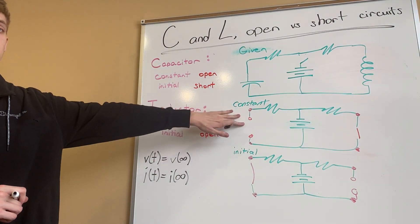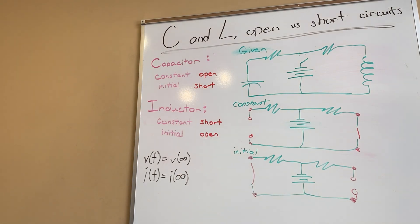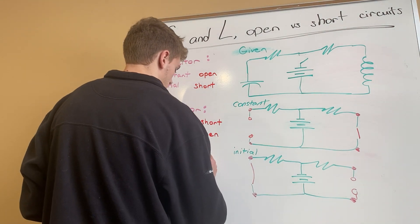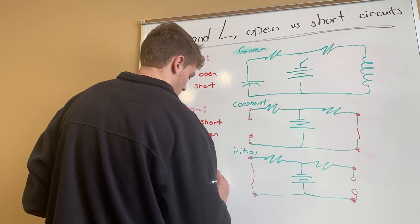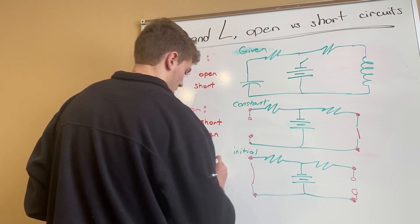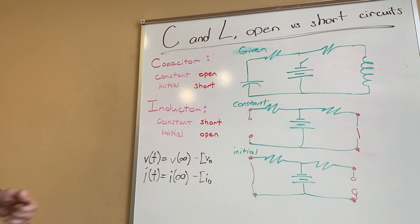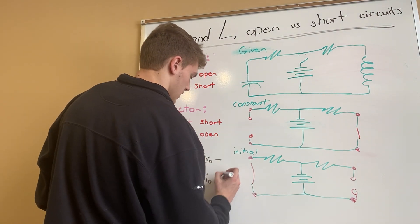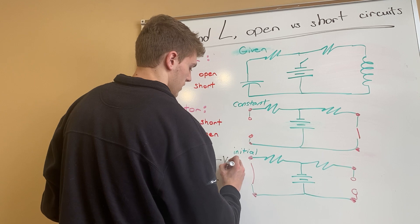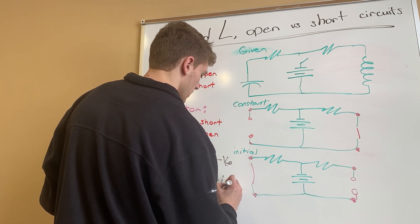Then we have minus V of zero or I of zero. Sorry, this is a plus and this is our minus, and that then is our V infinity or I infinity close brackets.